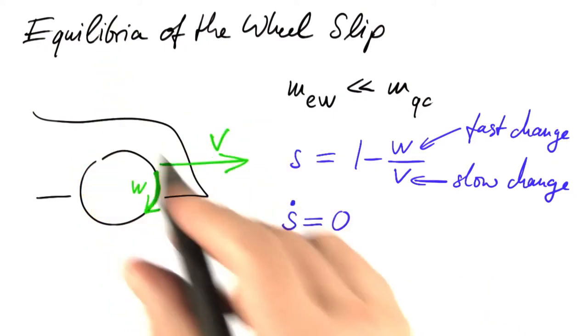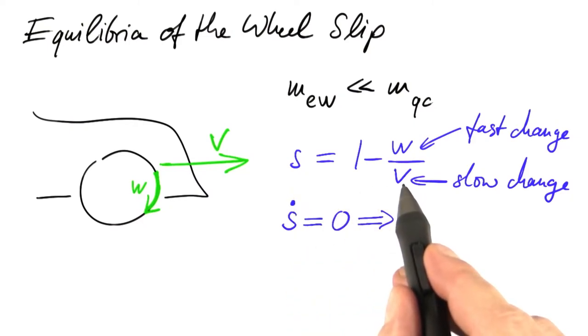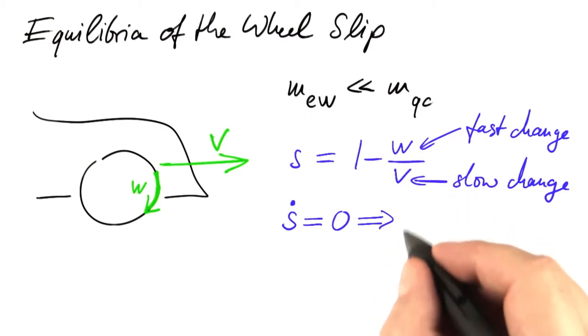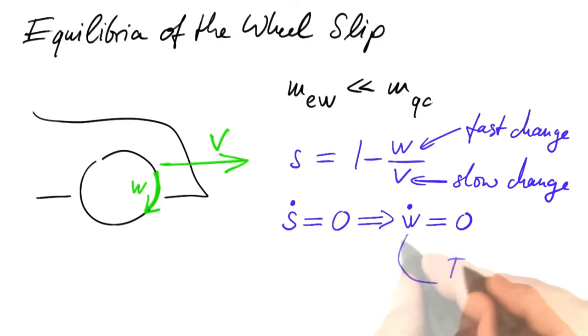This is the meaning of equilibrium. If s doesn't change and v is almost constant, we learn that w must not change. But we have an equation for the rate of change of w. It's the friction force divided by the effective mass of the wheel minus the braking deceleration of the wheel.